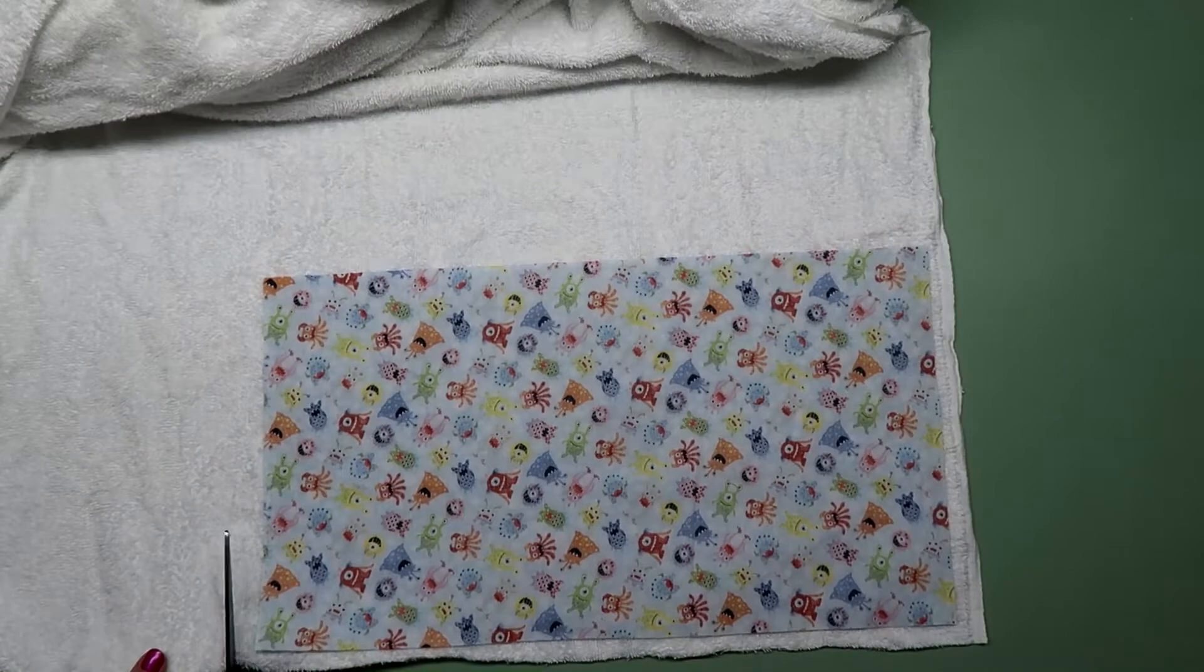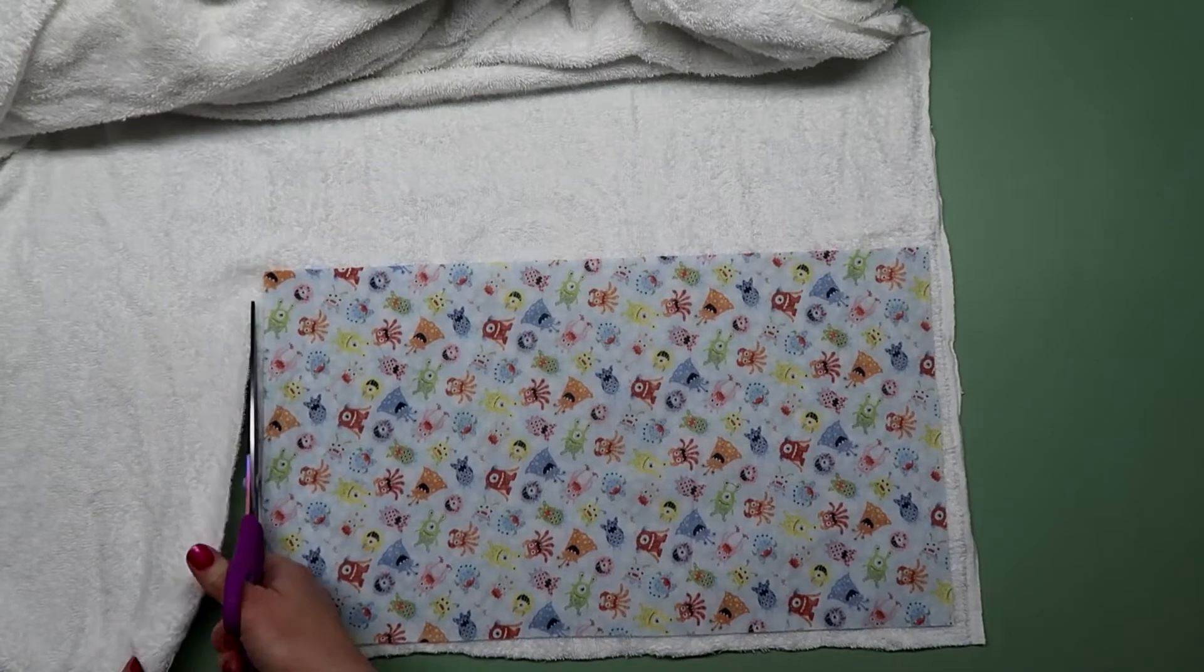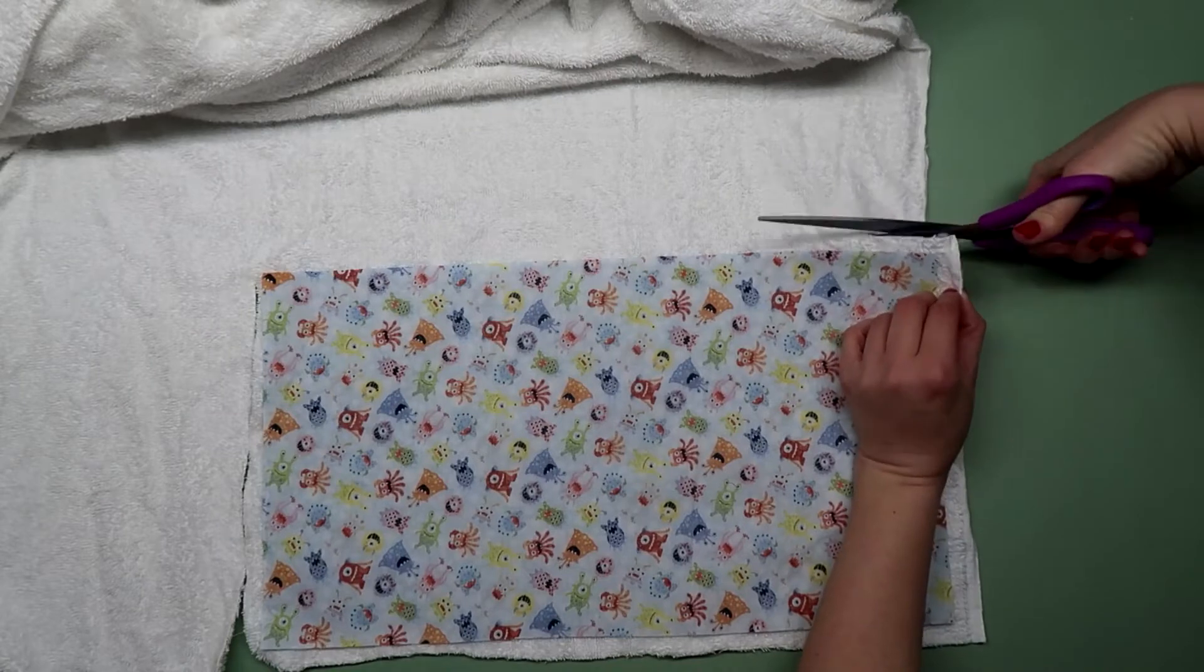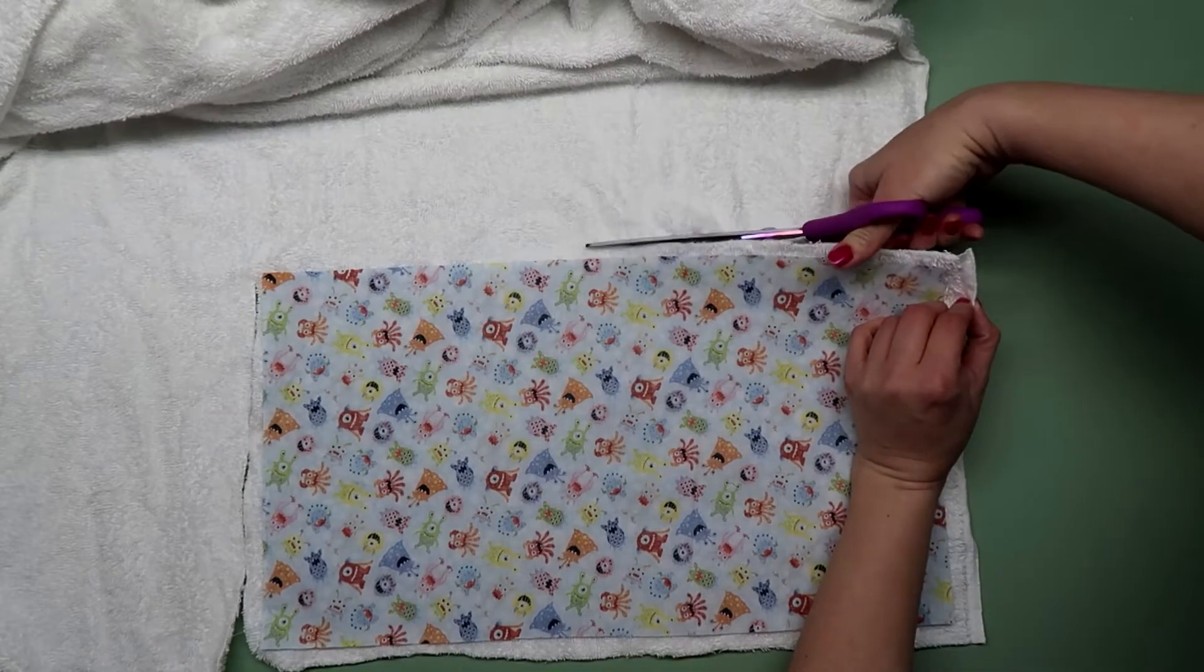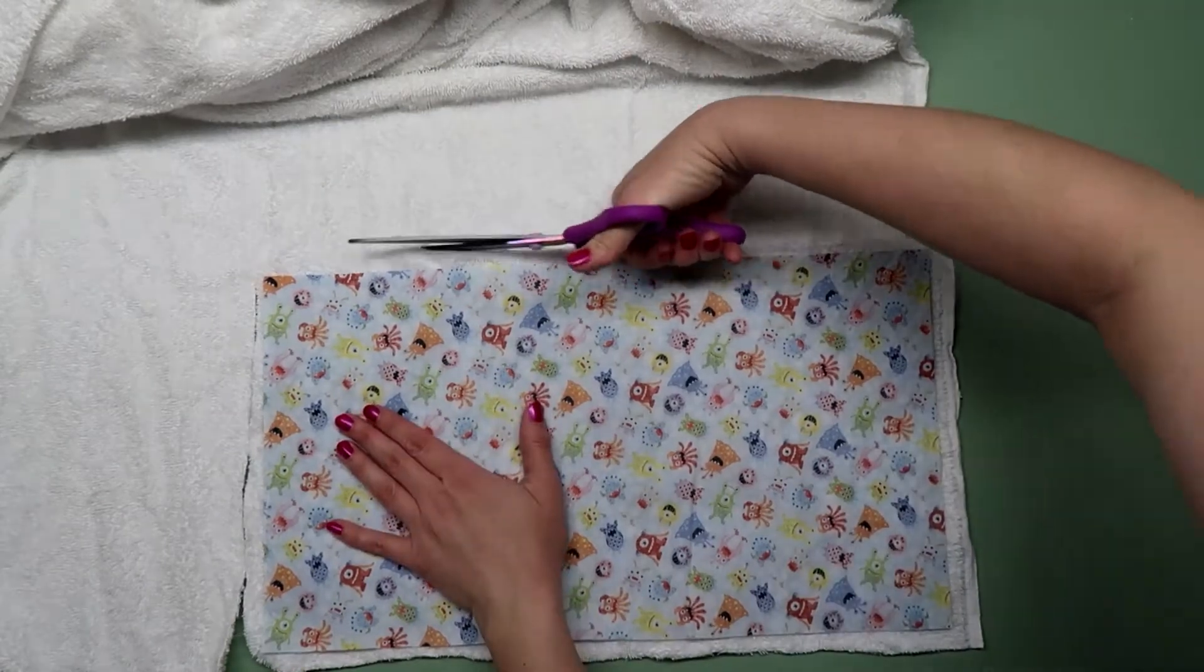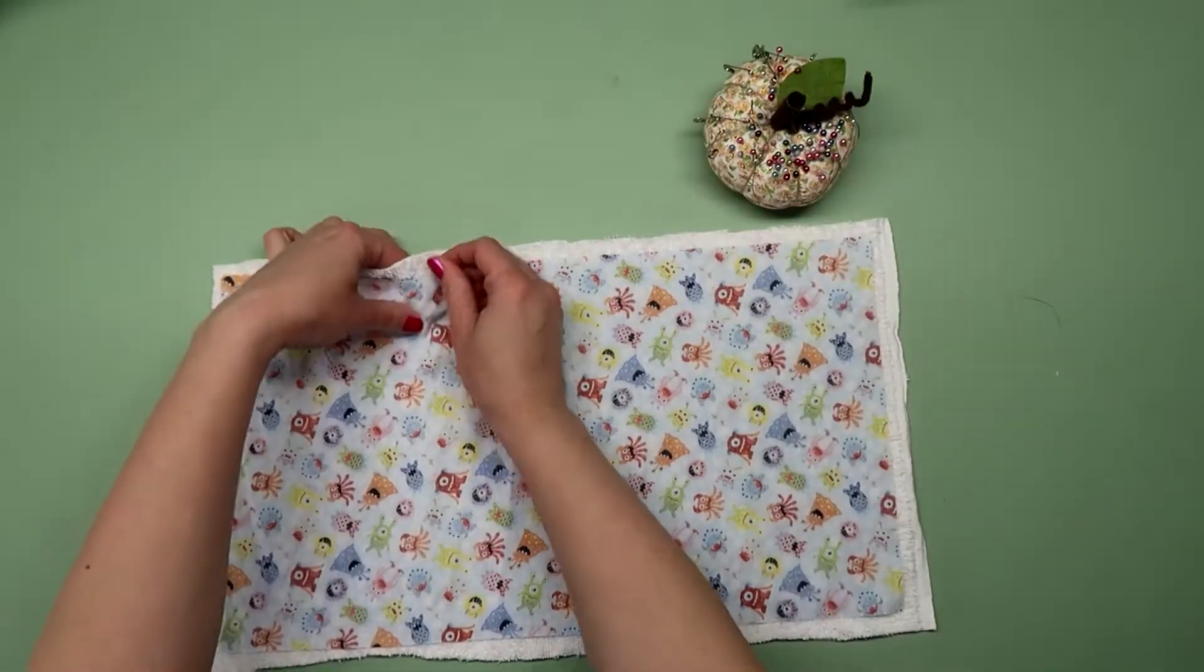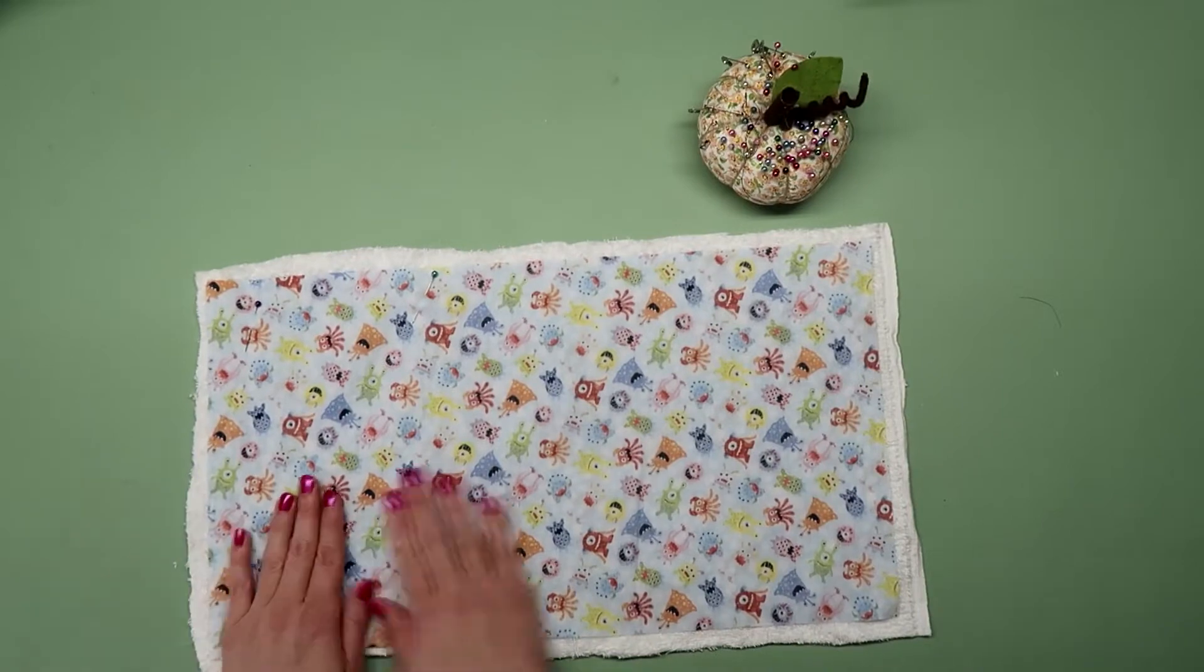Place your main piece right side down on top of the terrycloth and cut around it. You can cut it to size, but it can shift around while you're sewing, plus we'll trim it down later, so this is a little easier. Pin it all together and make sure to smooth the top piece as you pin, starting from one side to the other.